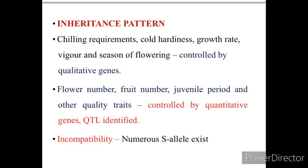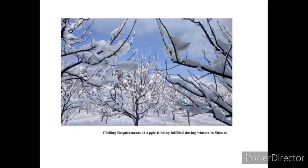Chilling requirements, cold hardiness, growth rate, vigor, and season of flowering are controlled by qualitative genes, while flower number, fruit number, juvenile period, and other quality traits are controlled by quantitative genes. Incompatibility is governed by numerous S-alleles. Apple is grown at a height of 1,600 to 3,200 meters above mean sea level, and the chilling requirement of apple is from 1,000 to 1,500 hours, which is fulfilled during winters.